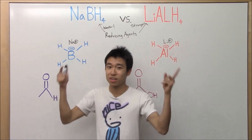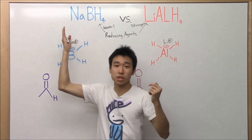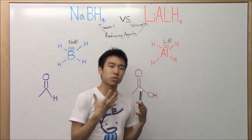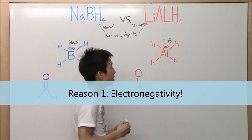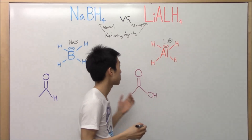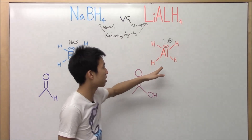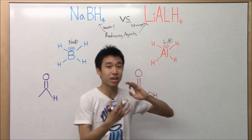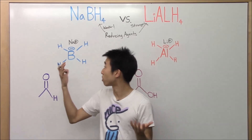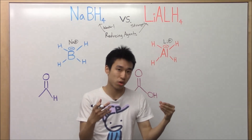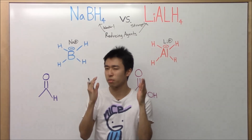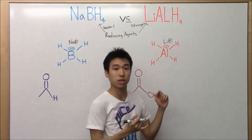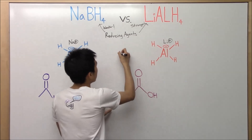So they are both reducing agents, but sodium borohydride is weaker and lithium aluminum hydride is stronger. Why? The first thing you need to think about is electronegativity. Think about aluminum versus boron — which one's more electronegative? Aluminum is not as electronegative as boron, meaning that its tug on electrons is not as strong as boron's. So now think about where the electrons are in the bond between boron and hydrogen, and a bond between aluminum and hydrogen.